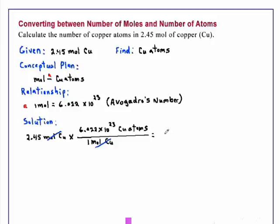Which rounded to the correct number of significant figures, which is 3, which is 1.48 times 10 to the 24th copper atoms.